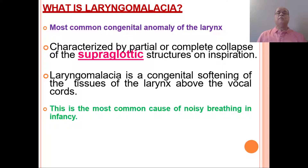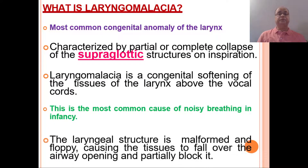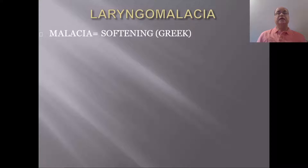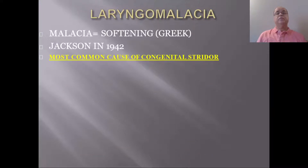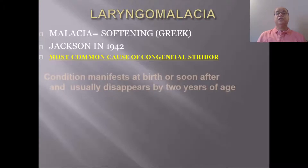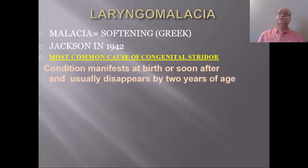This is the most common cause of noisy breathing — which we call stridor — during infancy. It is both the most common congenital anomaly of the larynx and the most common cause of congenital stridor. The laryngeal structures are malformed and floppy, causing tissues to fall over the airway opening and partially blocking it. 'Malacia' is a Greek word meaning softening. Jackson in 1942 described it as the most common cause of congenital stridor.